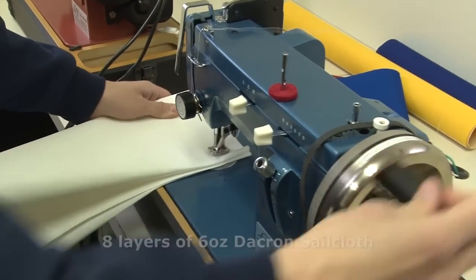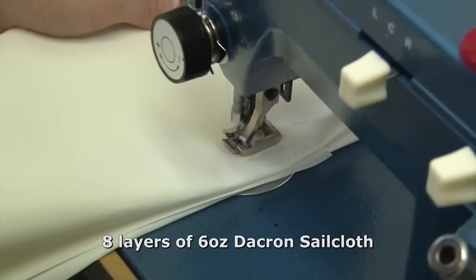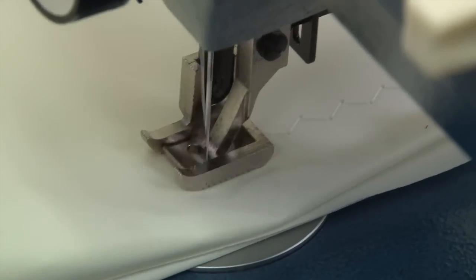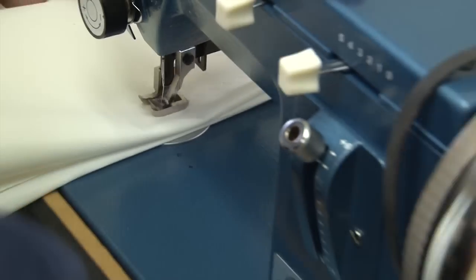Now here we are sewing eight layers of a six ounce Dacron sailcloth material. This stuff is hard to sew through and we're using the hand crank. It works beautifully.